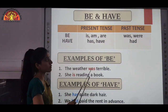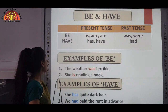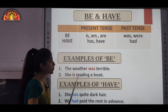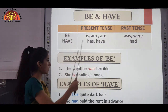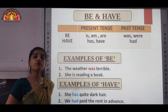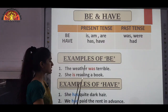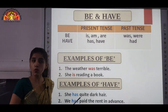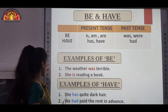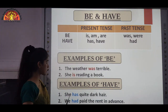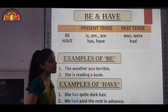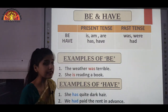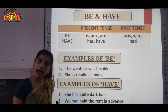Let's see some examples of the be form: 'The weather was terrible' — 'was' is denoting past tense. 'She is reading a book' — 'is' is denoting present tense. Now let's see examples of have: 'She has quite dark hair' — 'has' is denoting present tense. 'We have paid the rent in advance' — 'had' is denoting past tense.